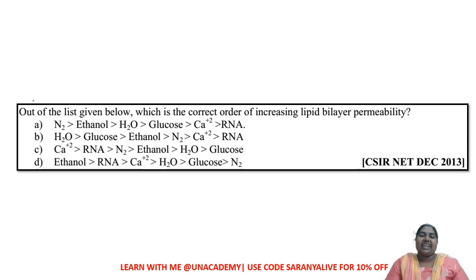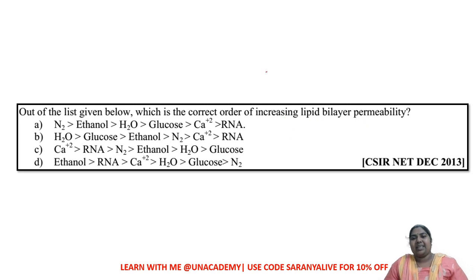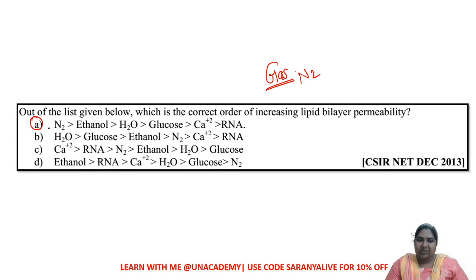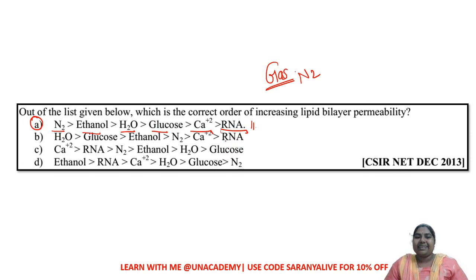Let us take a couple of questions to check our knowledge. From the list below, which is the correct order of increasing lipid permeability? The maximum permeability goes to gases — nitrogen is given, so nitrogen should be first with maximum permeability, followed by ethanol, then water, then glucose, then ions, and finally nucleic acid is the least permeable.